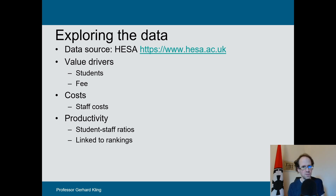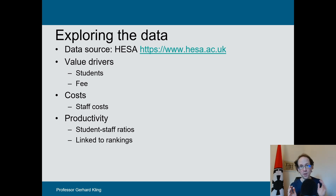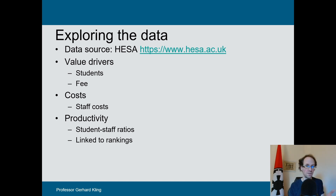The main value driver for universities is student numbers and fee payments. Of course, there are alternative revenue streams, and I'm happy to talk about this in other videos — just leave a comment down below. In terms of costs, the main cost factor is staff costs, usually about 60 to 65%. Productivity is usually measured using a measure of output and input, and a very common measure is to look at a staff-student ratio.